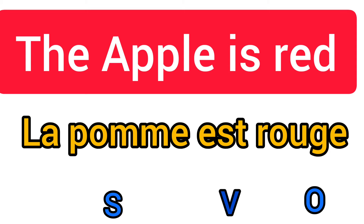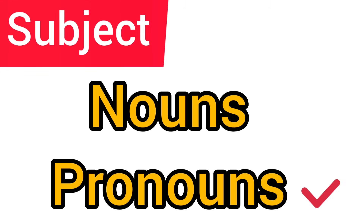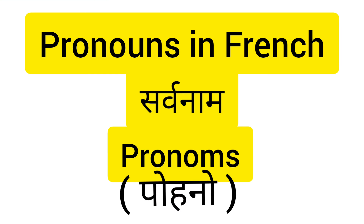How do we say it in French? 'La pomme rouge.' La pomme is feminine. La pomme rouge means 'the apple is red.' The subject can be two parts: nouns or pronouns. We have done nouns in our last video. Today we will study pronouns in French.